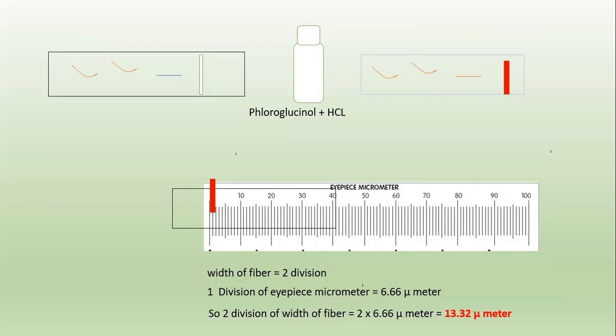Friends, we are going to take 20 to 25 readings of the samples. From these readings, we select the least and the maximum to obtain the range in which the particles are present. In this way, we measure the diameter of starch grains or circular particles, then the length and width of the fiber, or any microscopic particle, by utilizing the calibrated eyepiece micrometer.